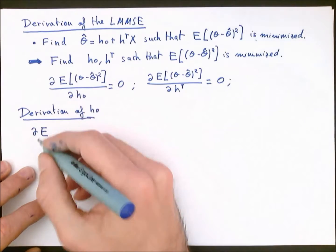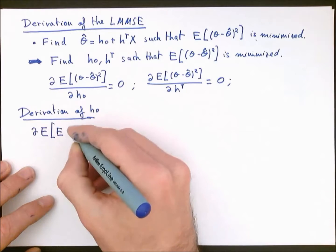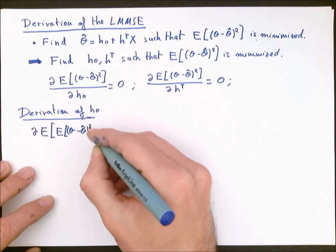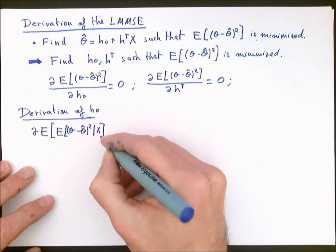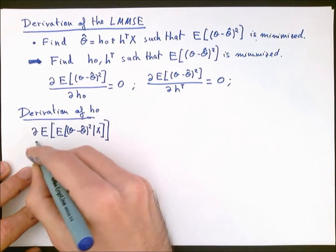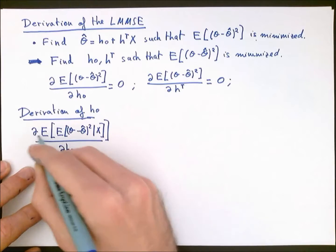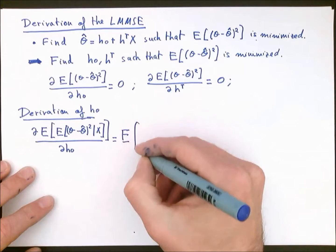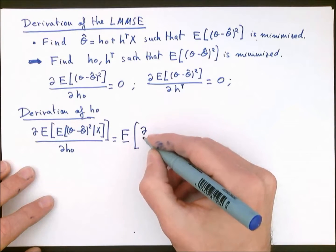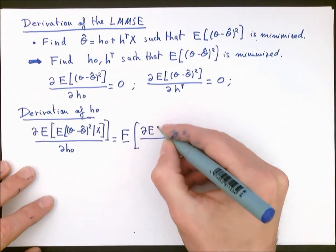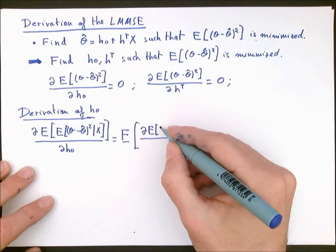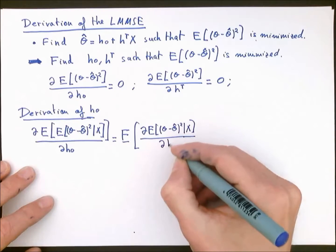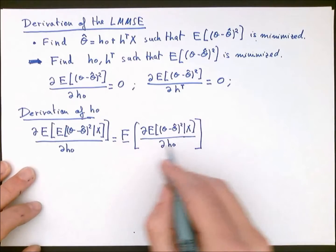First, I'm going to write the expectation as two expectations, where the inner one is going to be the conditional MSE — the conditional expectation of the squared error conditioned on the value of x — and the outer one will be taken with respect to x. The result of the operation can then be written as the derivative of the conditional expectation, to which we will later apply the outer expectation with respect to x. This is just to make the calculations a bit faster.